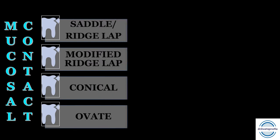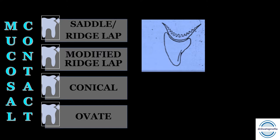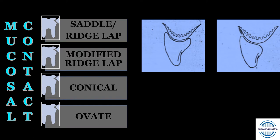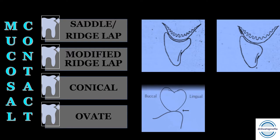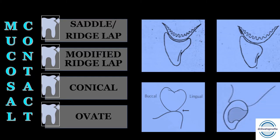Now let us discuss the pontics with mucosal contact. First is the saddle or ridge lap — it has a concave fitting surface that overlaps the residual ridge buccolingually. Second is the modified ridge lap pontic, which overlaps the residual ridge on the facial side only with clearance on the lingual side. Third is the conical pontic, which is convex with only one point of contact at the center of the residual ridge. Fourth is the ovate pontic, which also has a convex tissue surface and resides in a soft tissue depression in the residual ridge.